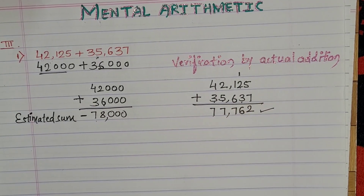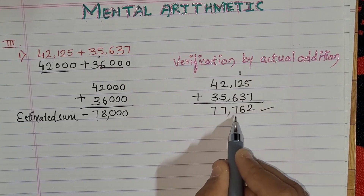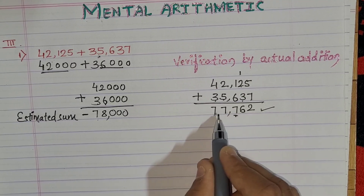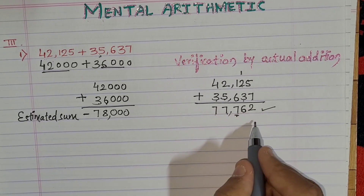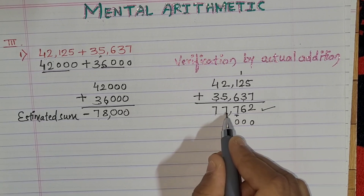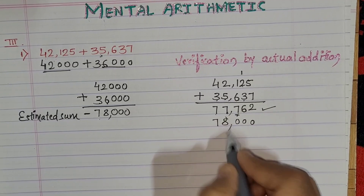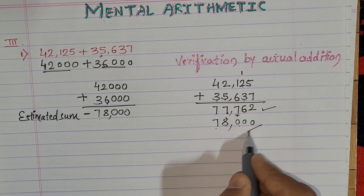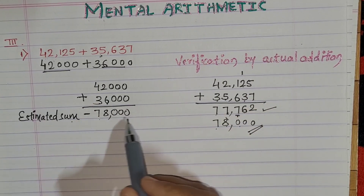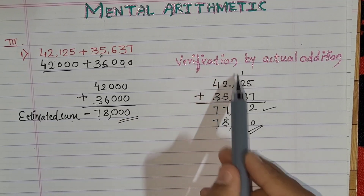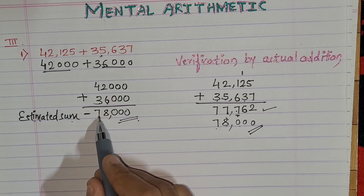Now rounding off 77,762 to the nearest thousand place: the digit at the hundreds place is 7, so we replace the units, tens, and hundreds by 0 and add 1 to the thousands place. That is 7 plus 1 equals 8, and 7 remains as it is. So the answer is 78,000. This is by actual addition, and our estimated sum was also 78,000 — we got the same answer. This is the verification method. Our answer is 78,000.